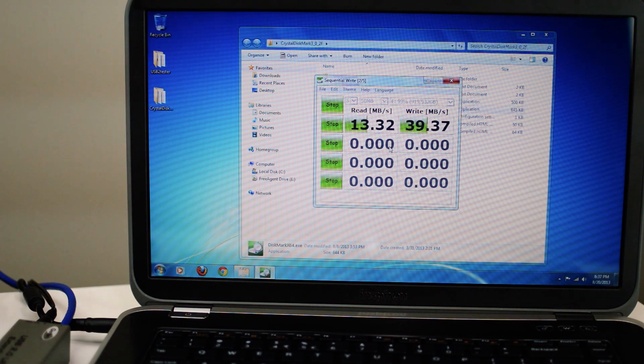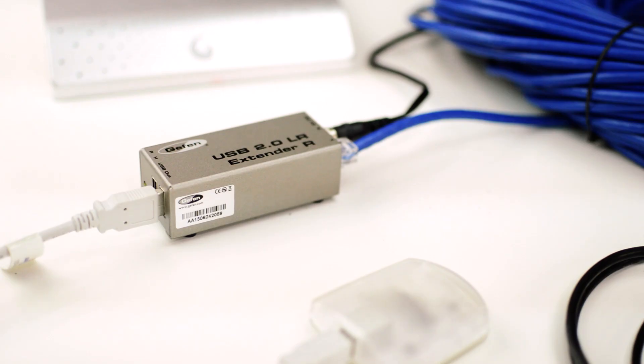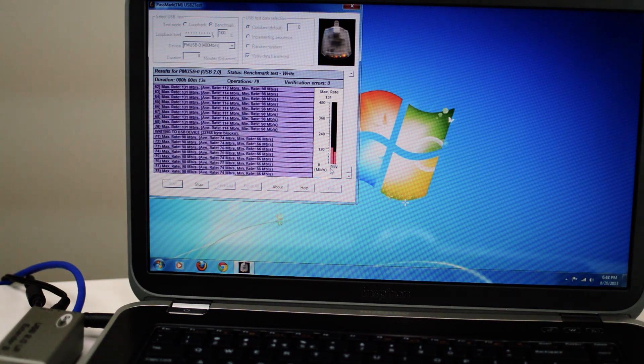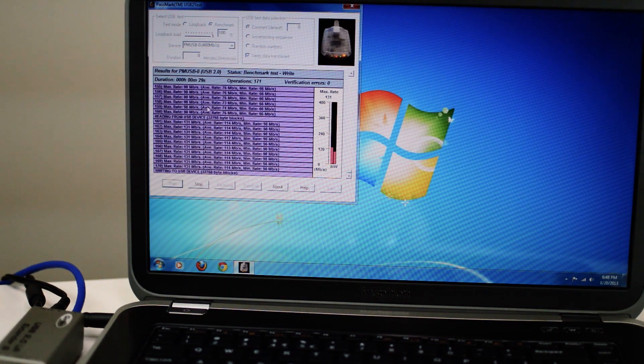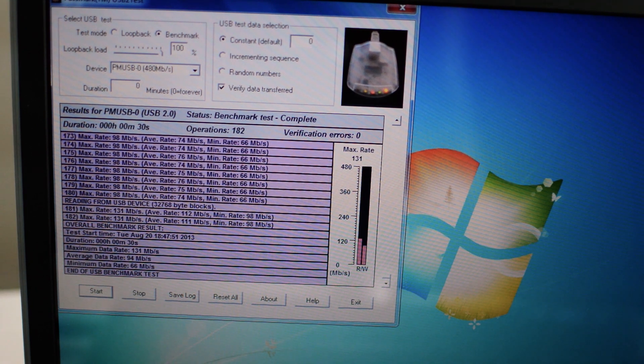After the test, we get 13.32 megabytes per second read and 39.37 megabytes per second write. Now we switch to the Passmark tester. We get a max of 131 megabits per second read and 98 megabits per second write, with an average data rate of 94 megabits per second.